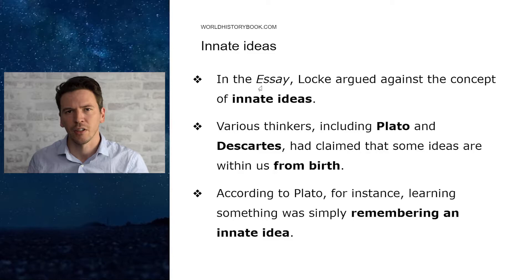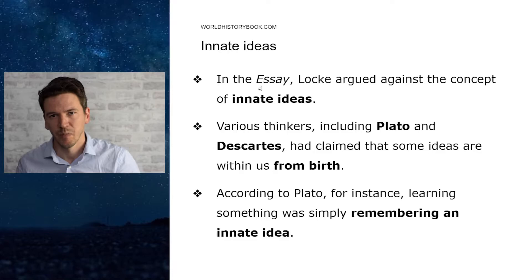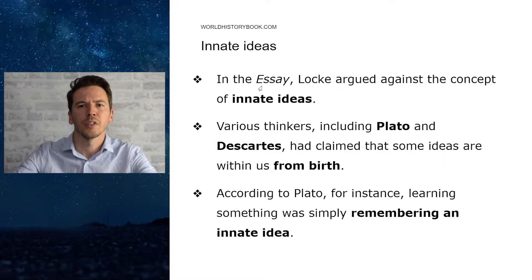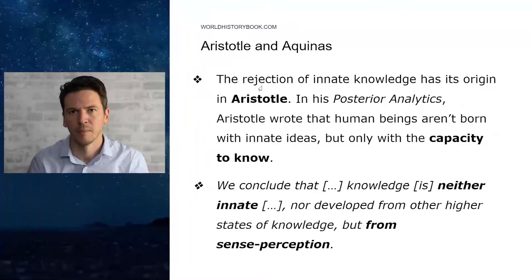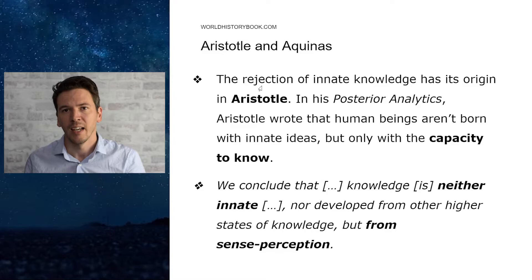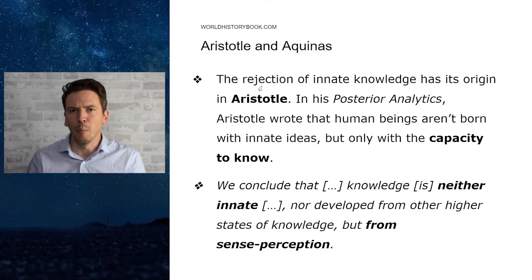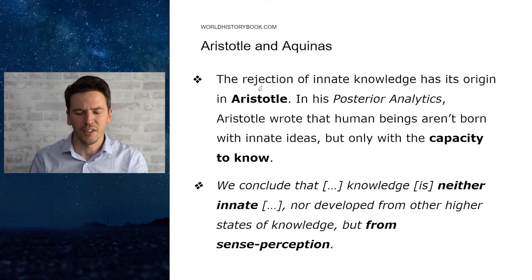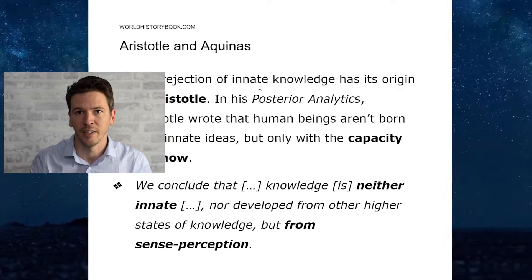In his essay, Locke mainly argued against the concept of innate ideas. Various thinkers, including Plato and Descartes, had claimed that some ideas are so essential to us that we are born with them — they are in us from birth. According to Plato, learning something about the world was simply remembering an innate idea that was in us all along. The rejection of innate ideas has its origin in Aristotle. In his work called Posterior Analytics, Aristotle wrote that human beings aren't born with innate ideas, but only with the capacity to know: 'We conclude that knowledge is neither innate nor developed from other higher states of knowledge, but from sense perception.' That is why Aristotle is often called the first scientist or the grandfather of science.